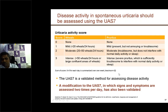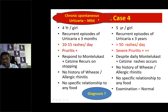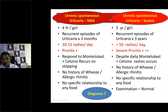Coming back to cases three and four. The left side child has chronic urticaria lasting more than six weeks with 10 to 15 rashes and mild pruritus - this is mild chronic spontaneous urticaria. The right side child has more than 50 rashes per day with severe pruritus lasting more than six weeks with no trigger - this is severe chronic spontaneous urticaria.